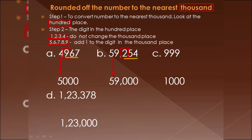Next is 999. The thousands place is not given, which means it is zero. The hundreds place is 9, which is greater than 5, so we add one to the thousands place — that becomes 1 thousand. So the rounded number of 999 is 1000.